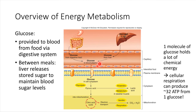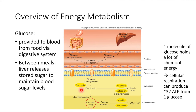Glucose can be taken into cells throughout our bodies, and once it's inside the cell, we can harvest energy from it. Glucose is a pretty energy-rich molecule — in the process of breaking it down, our bodies are able to get about 32 ATP from each glucose molecule. The first step in breaking down glucose is to split it in half, and that process is called glycolysis. We'll be looking at this in detail on the next slide.